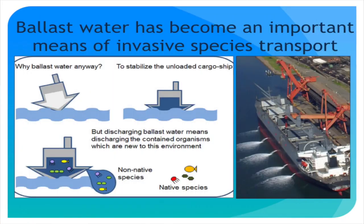Ballast water is another major vector. Ships no longer use rocks for ballast — they use seawater — and things can live in that ballast tank. If they get dumped in a place with similar enough climate, a whole assemblage of organisms arrives. Some may be descendants of ones that started the trip, either by reproducing in the tank or settling on the walls and maturing. It's probably too late in most places to determine what was originally native — we've been around the oceans too much.